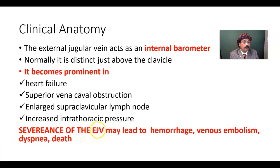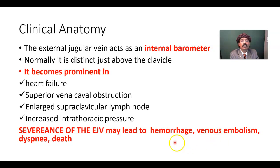Severance of the external jugular vein may lead to hemorrhage — certainly, if the vessel is opened, there will be sudden hemorrhage. There is also the risk of venous embolism, specifically air embolism, which may be a very severe condition and may lead to death. Air embolism in the venous system may block the superior vena cava or block the right atrium entirely, which may lead to death.